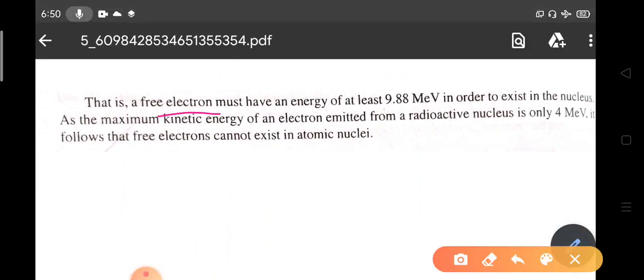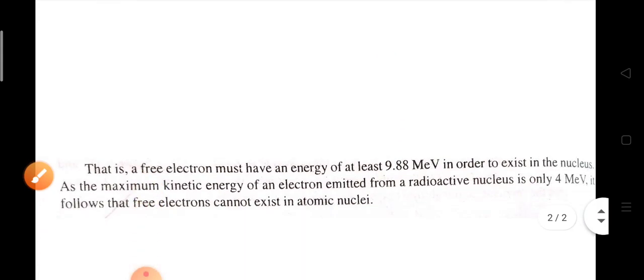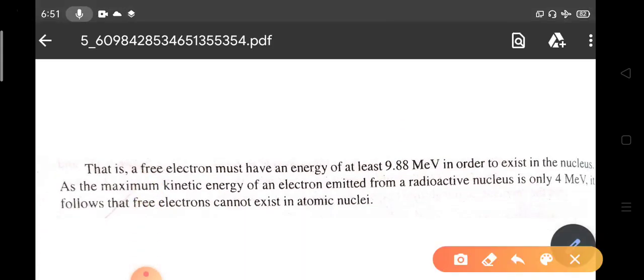The conclusion is that a free electron must have an energy of at least 9.88 MeV in order to exist in the nucleus. But the minimum kinetic energy of an electron emitted from a radioactive nucleus is only 4 MeV (beta rays). Therefore, free electrons cannot exist in atomic nuclei because the required energy is 9.88 MeV.